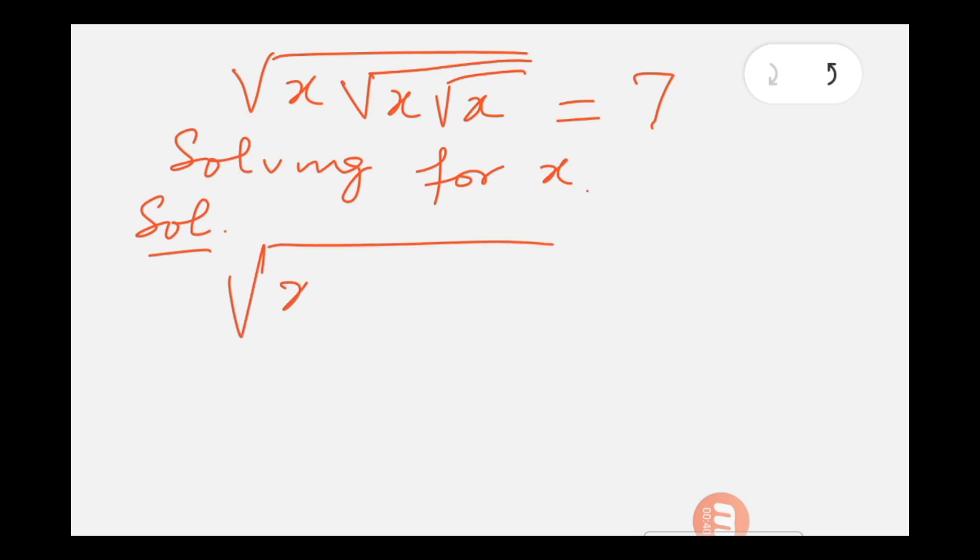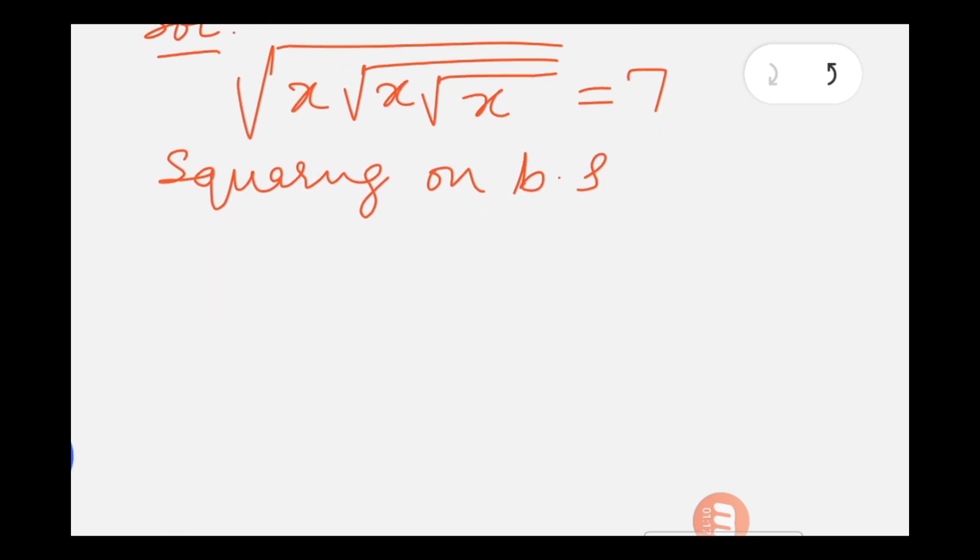Hi everyone, in this video we are going to solve the value of x from a radical equation which involves multiple radicals in the same equation. Now if we square on both sides so that we get rid of square roots on the left side, there are three square roots so we have to square three times on the left and right.